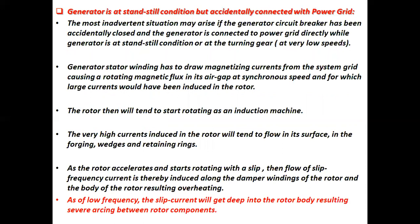If the generator is at standstill condition but accidentally connected to the power grid, the most inadvertent situation may arise if the generator circuit breaker has been accidentally closed and the generator is connected to the power grid directly, while the generator is at standstill condition or at turning gear, that is at very low speeds. The generator stator winding has to draw magnetizing currents from the system grid, causing a rotating magnetic flux in its air gap at synchronous speed, for which large currents would be induced in the rotor.